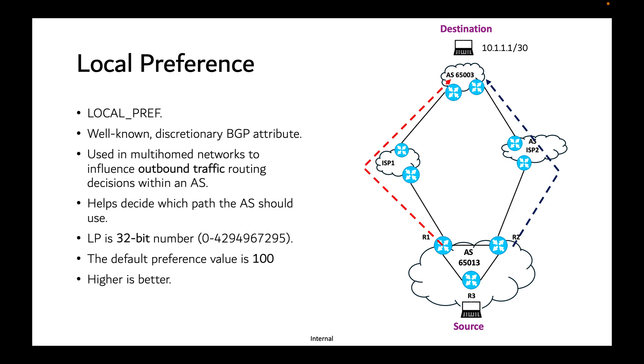The higher the local preference of a particular prefix, the more preferred it is. So, if you want to prefer some exit point or path, you have to make sure the local preference is higher. Local preference is propagated only within the local AS; it is not shared with external AS.